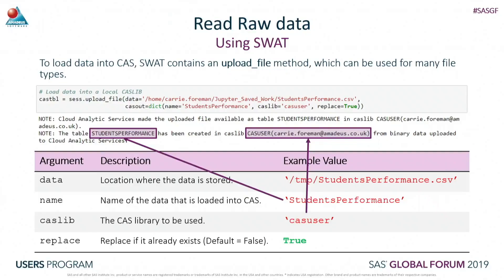When I run the code, it gives me information about the upload underneath the code cell. You can see within the log that we've got the student's performance data set which has been loaded, and it's been created in the library called CAS user.